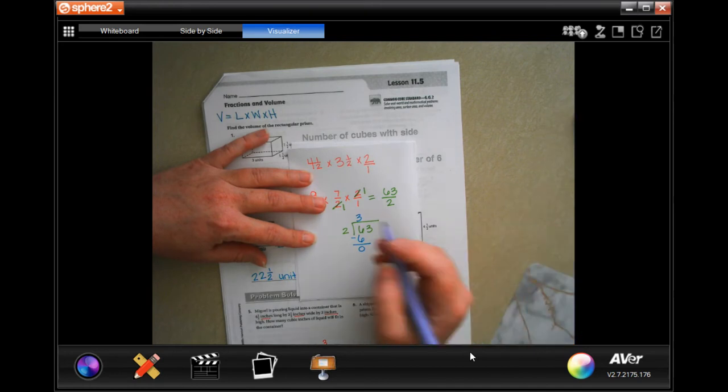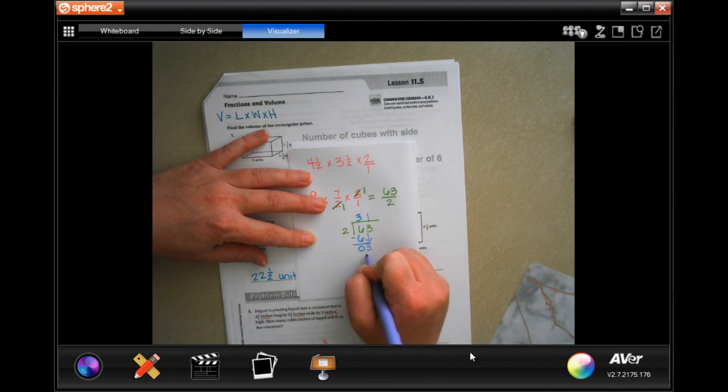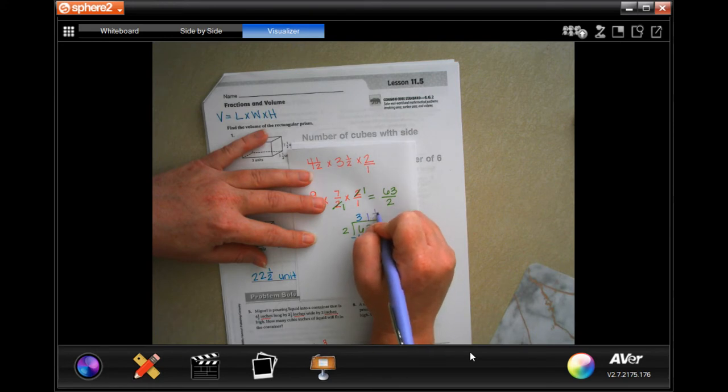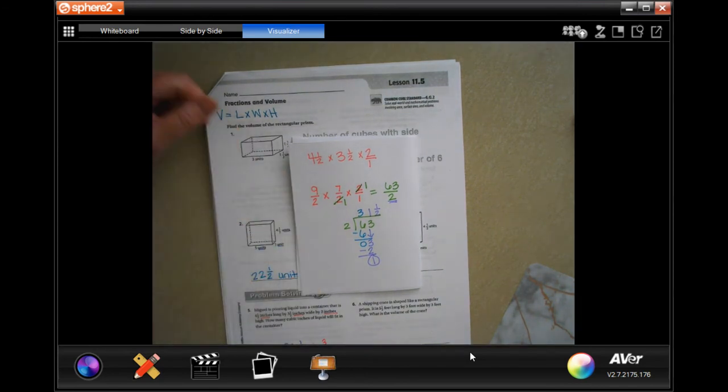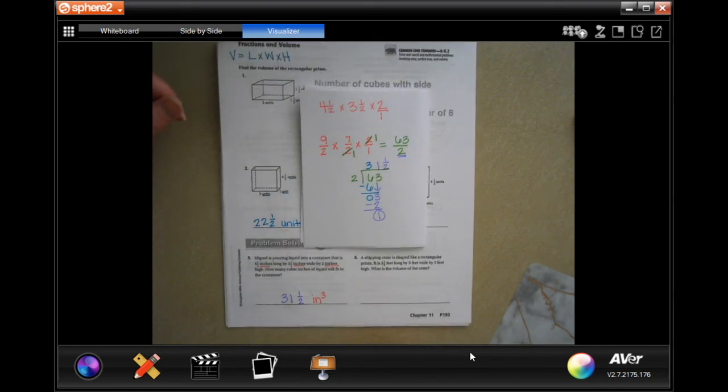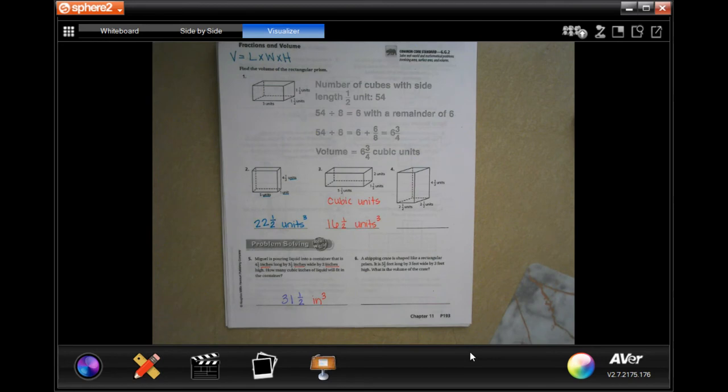So, 2 into 63. 2 goes into 6, 3 times. 3 times 2 is 6, subtract 0. 0 is definitely smaller than 2, so I'm going to bring down this 3. 2 goes into 3, 1 times. 1 times 2 is 2, subtract, get 1. My 1 is my new numerator, and my denominator stays the same. So, 31 and a half inches cubed. Make sure you guys are writing your work down.